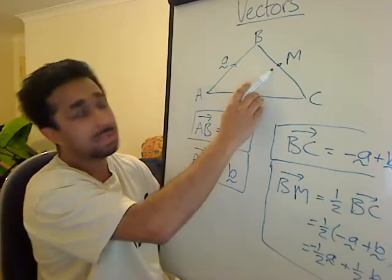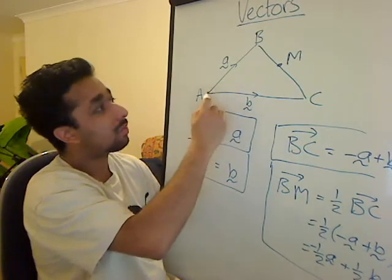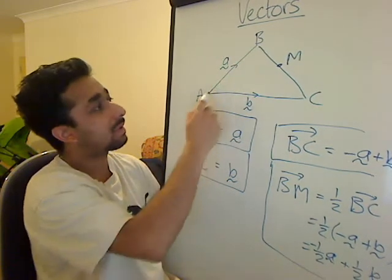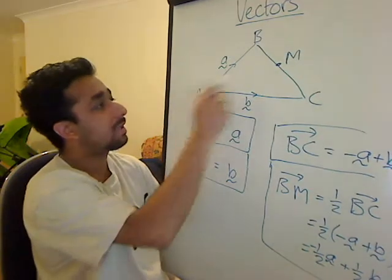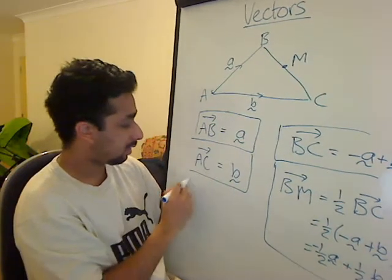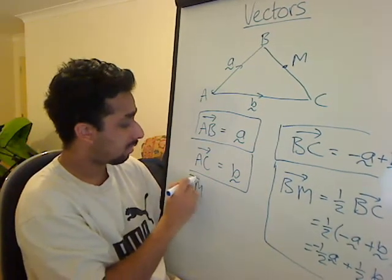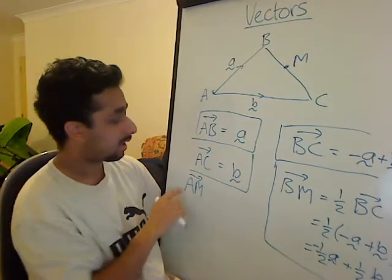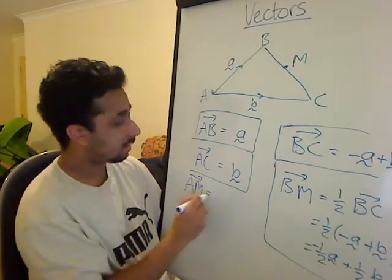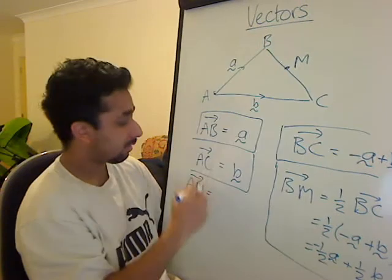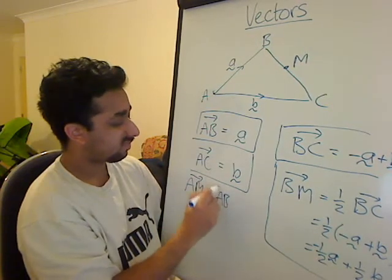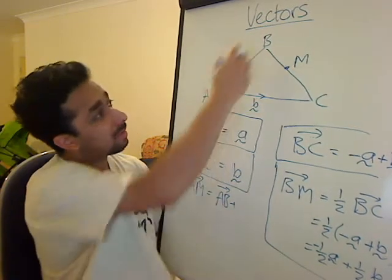We've just worked out B M. Okay. And we already have A B. So it makes sense to go this way, to get from A to M. I should have wrote down what we're trying to do again. A M, to get from A to M, it's equal to A to B plus B to M.